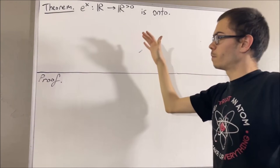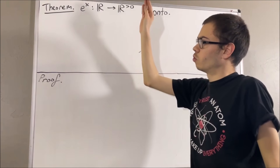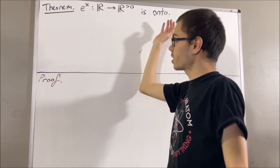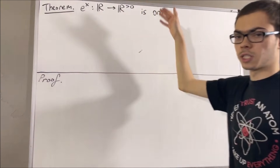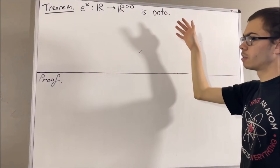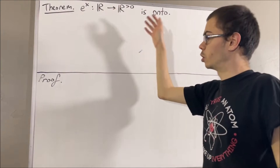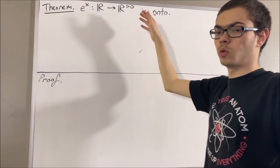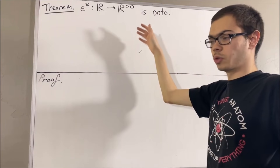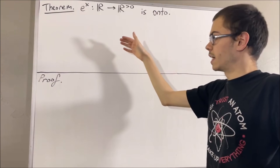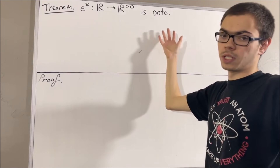First of all, let's remind ourselves of where we started. We know that for every real number x, e to the x is the limit of the sequence (1 + x/n)^n. From there, we proved some properties of the exponential function, including e^x · e^y = e^(x+y), e^x ≥ 1 + x, and e^x > 0 for all real numbers x.